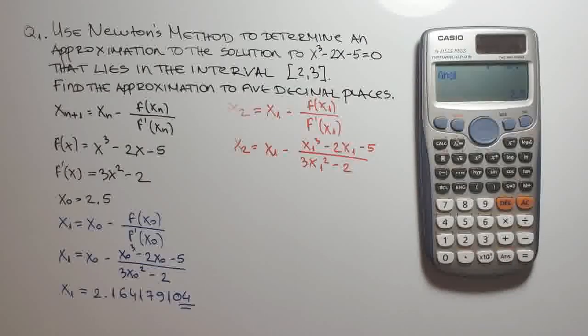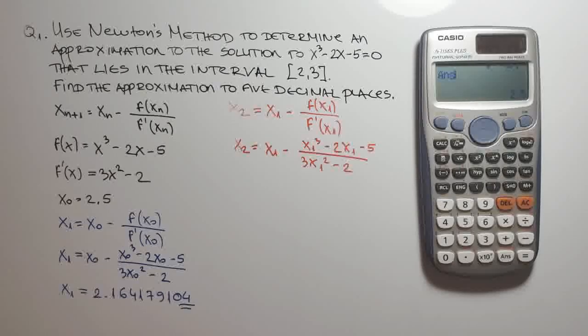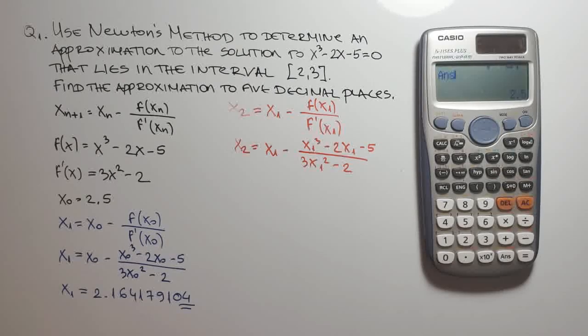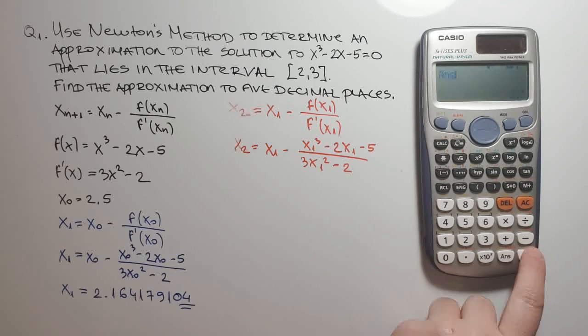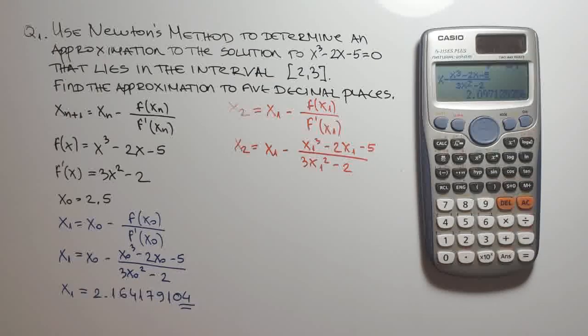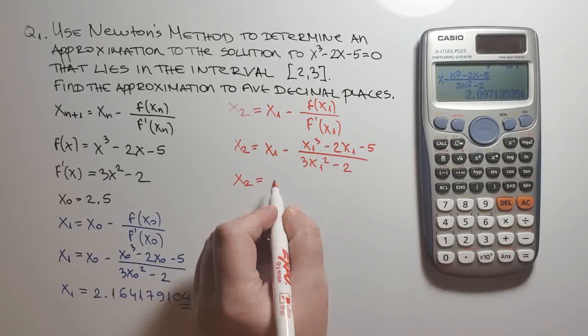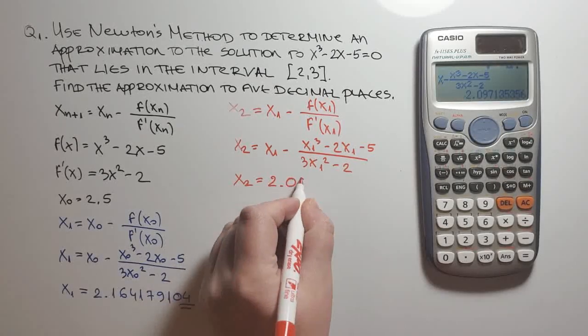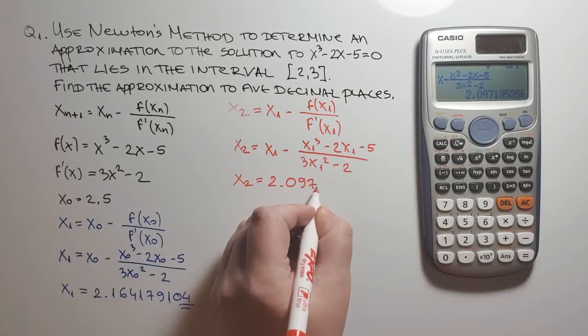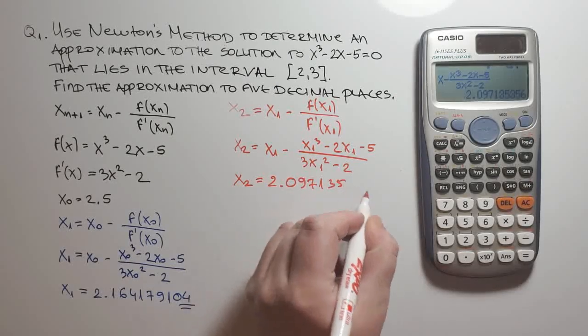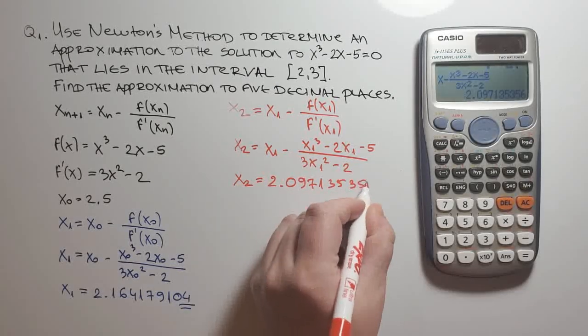Which is a memory of the last calculation. So the calculator has stored the value automatically. Now I just press the equal key and here it is, the second approximation. So we have x sub 2 equals 2.097135356.